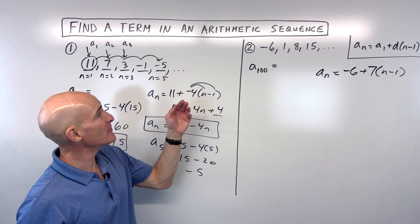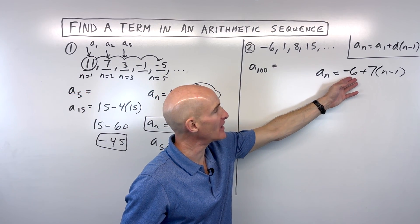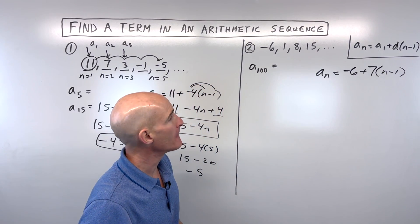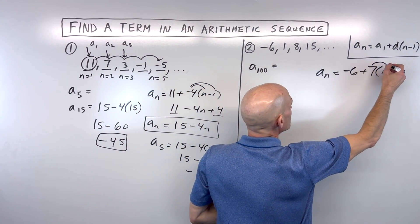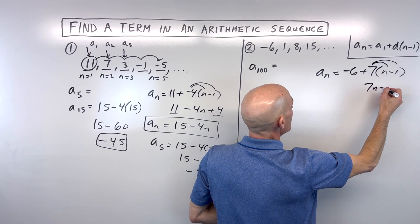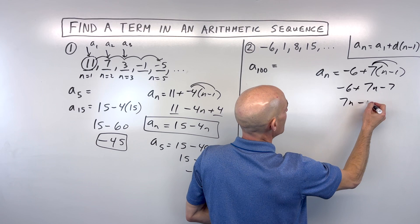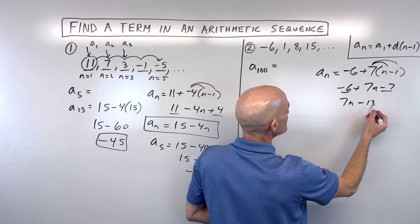Again, why n minus 1? Because we're already at the first term, negative 6, so we just have to add 7 one less time to get to the term that we want. So let's simplify a little bit here. Let's distribute. This gives us 7n minus 7. And that's going to be 7n minus 13 if we combine the negative 6 and negative 7.